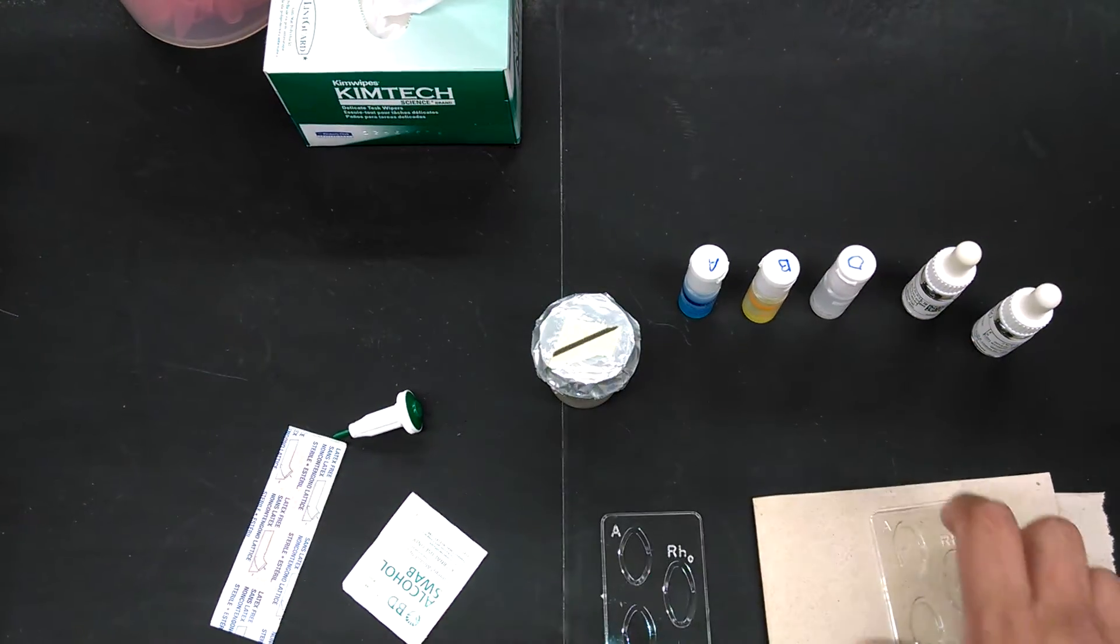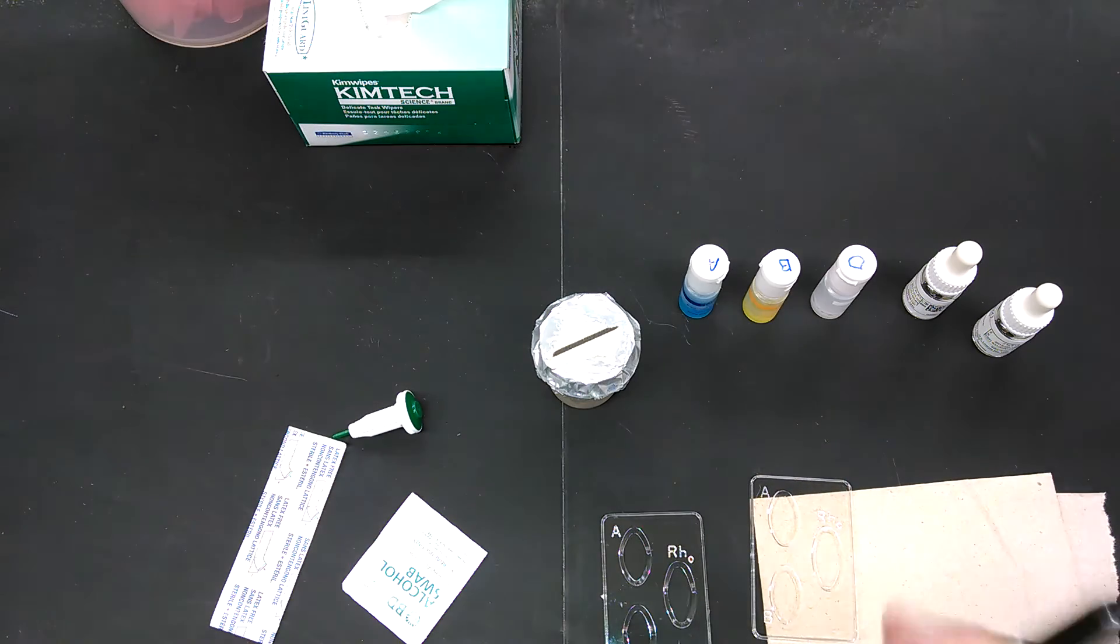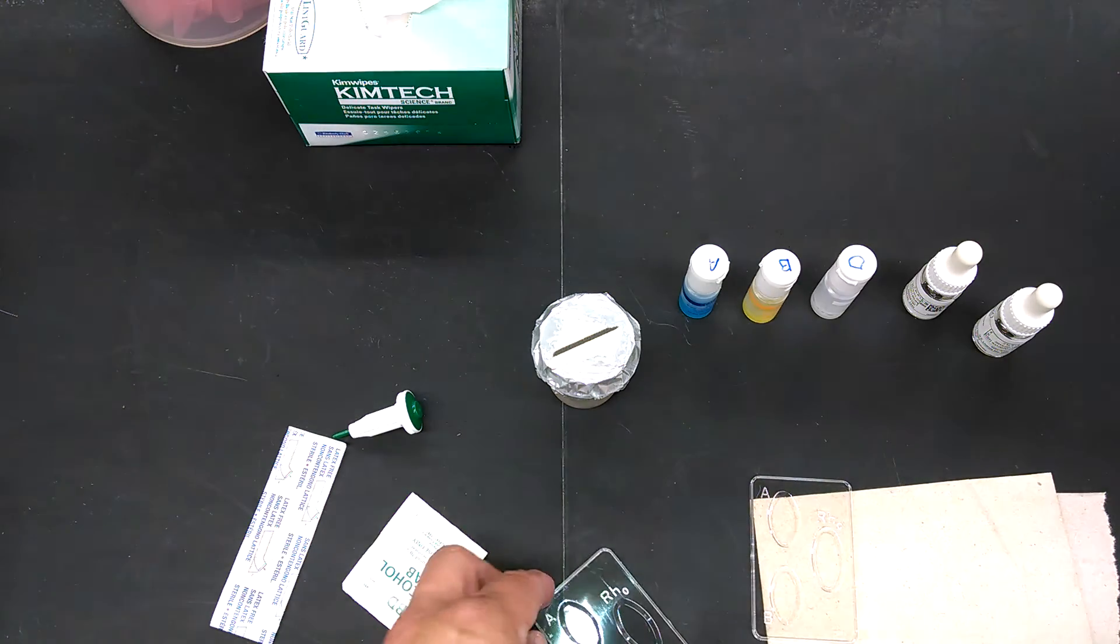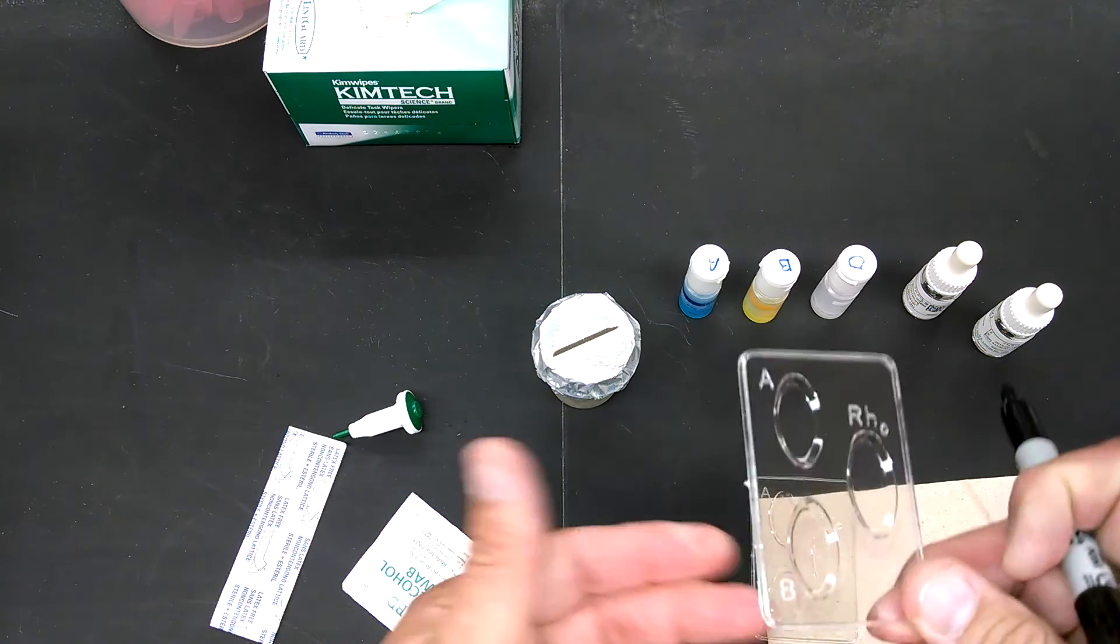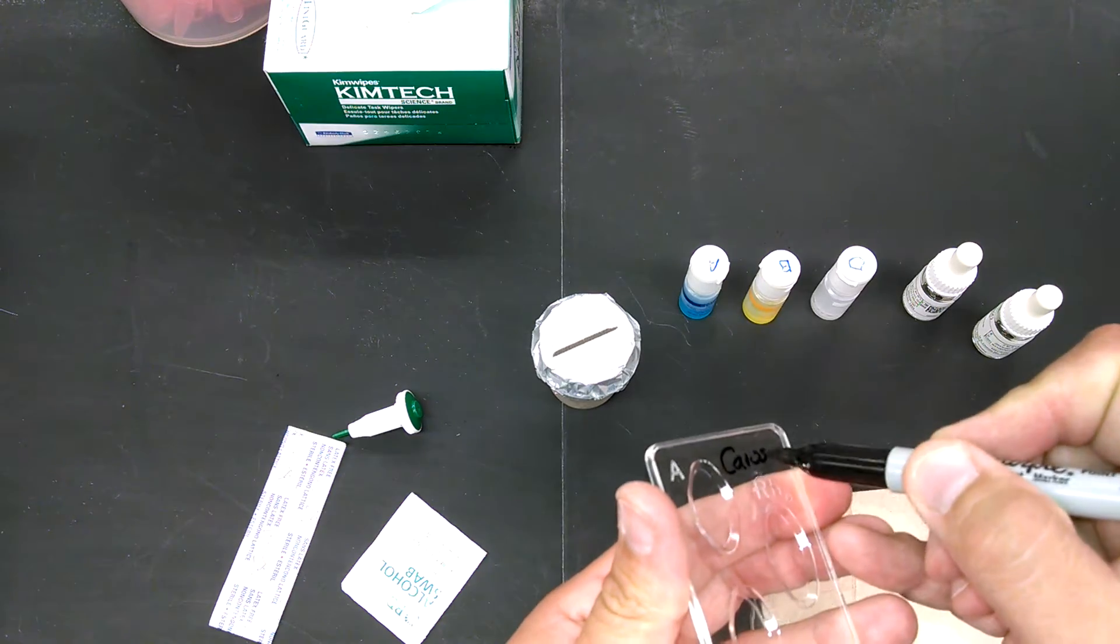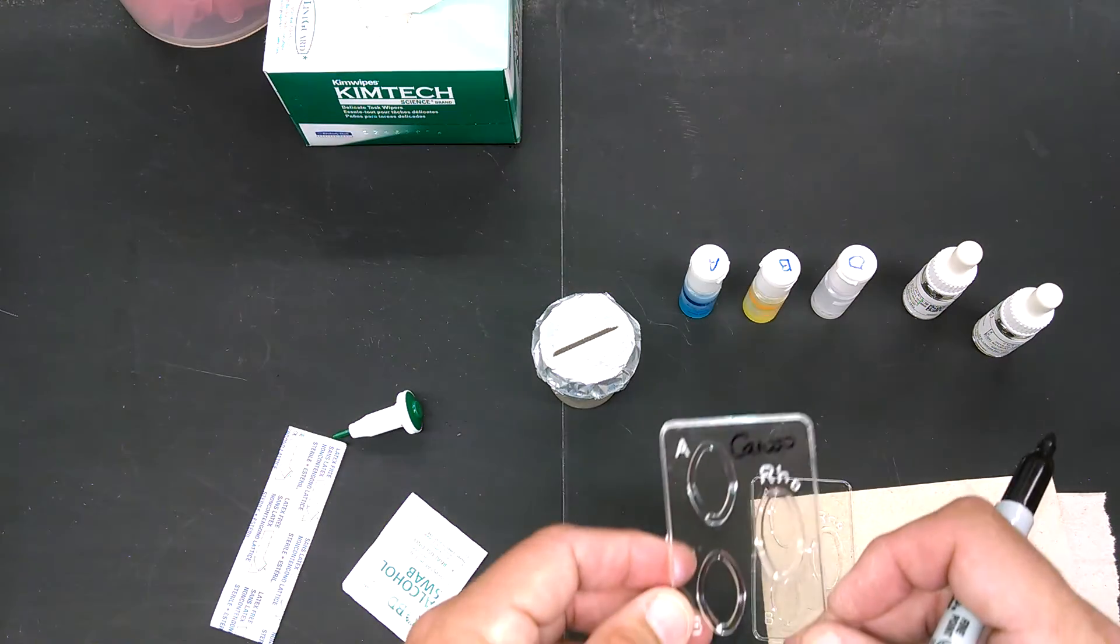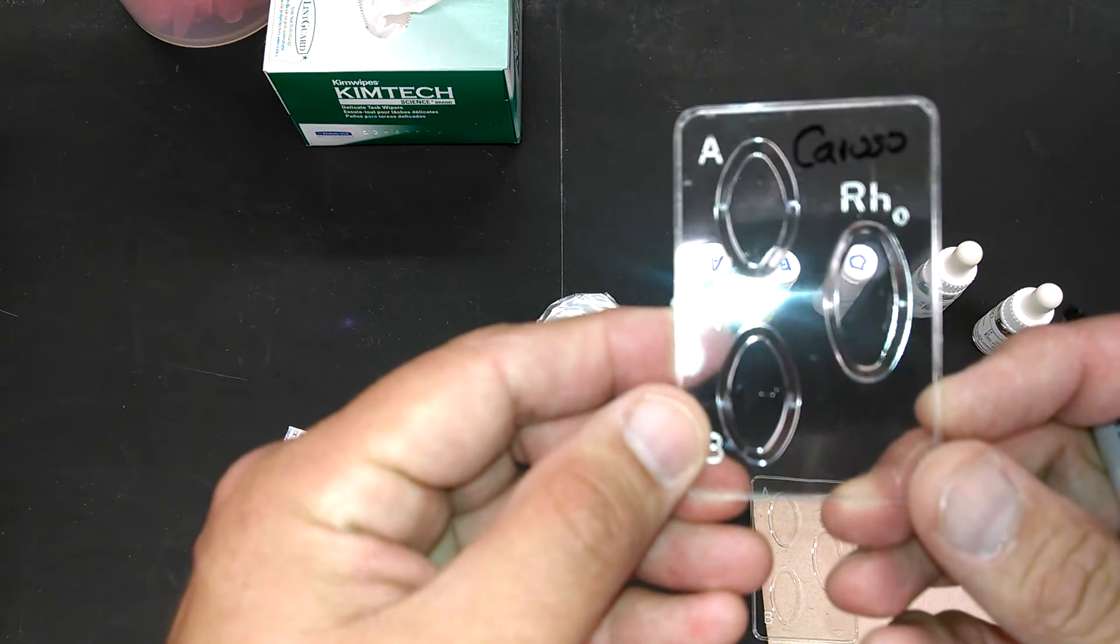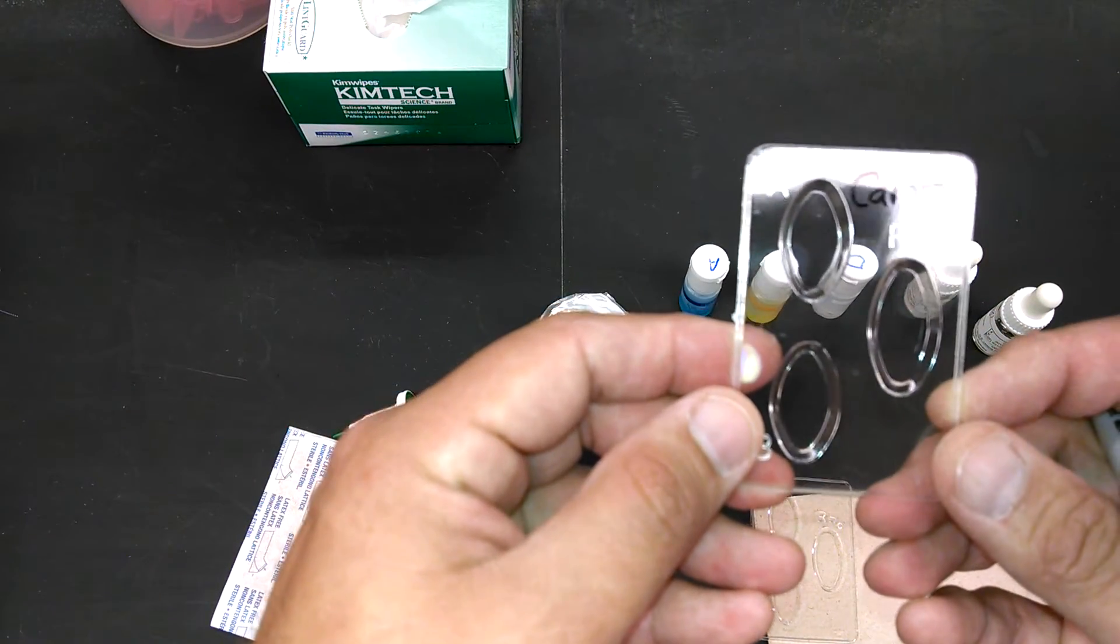You're going to want to do a little bit of prep work before you stab yourself with a lancet. Since everyone in the lab is going to be doing this at the same time, you want to label things. First, make sure your name is on the tray because some of these reactions take a little bit of time, and you may have to wait before you're able to see whether you're A, B, M, N, or MN.